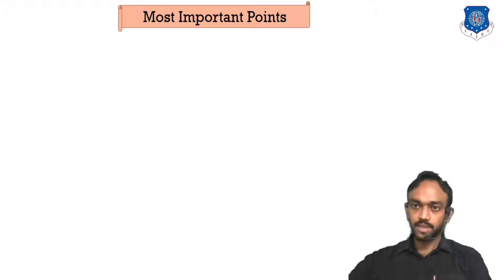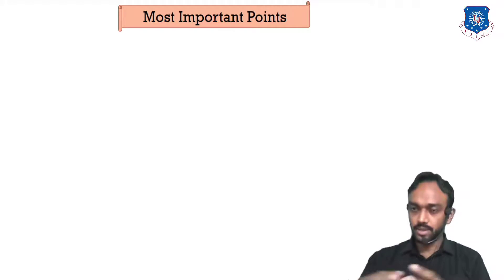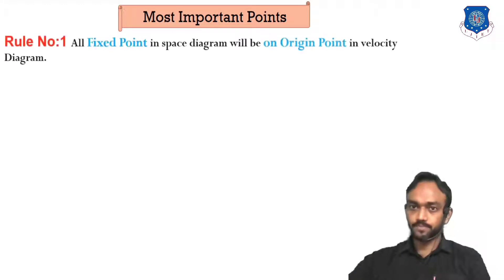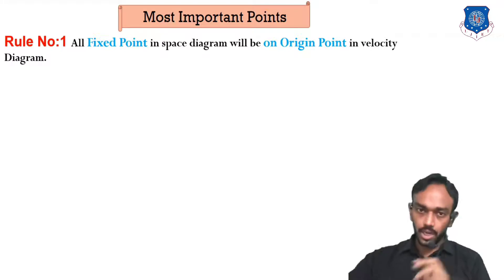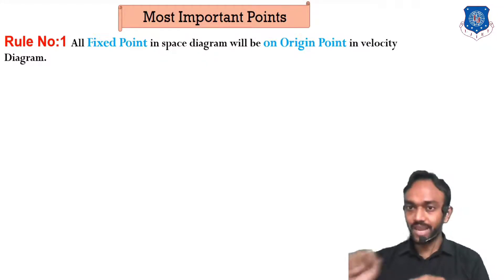Before starting the example of velocity in mechanism, we will revise some points we have learned in the previous lecture, because in this chapter there is no derivation or any formula. Examples totally depend on the fundamental things we have learned in theory. The first rule is that all fixed points will be at the origin — whatever the number of fixed points you see in the mechanism will be at the same origin point in the velocity diagram.